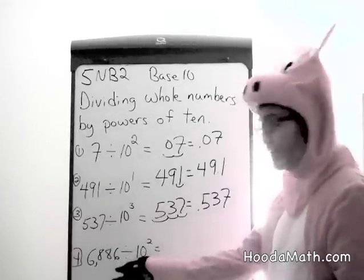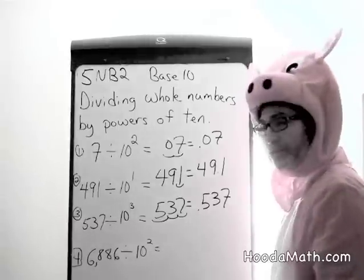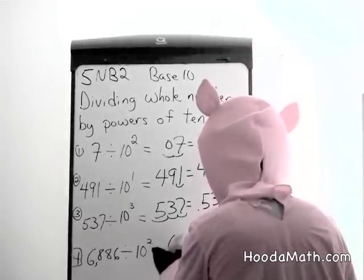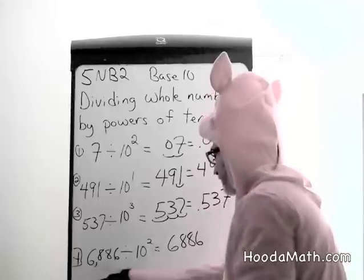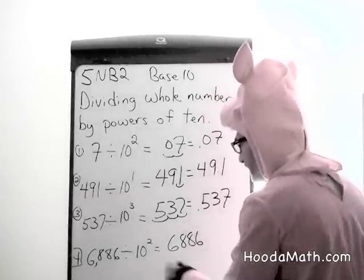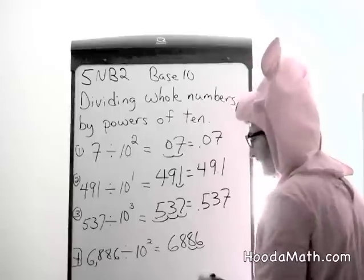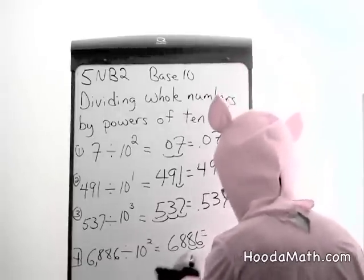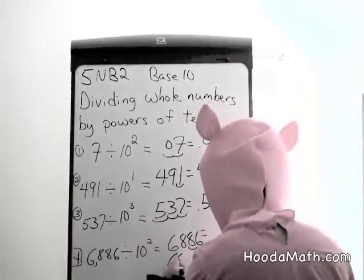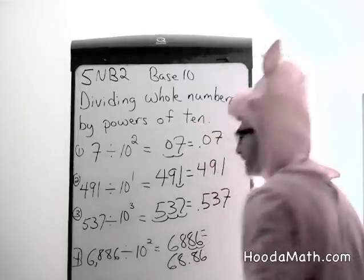And finally, 6,886 divided by 10 to the second power: we write down the number 6,886 and move the decimal one, two places to the left — or 68 and 86 hundredths.